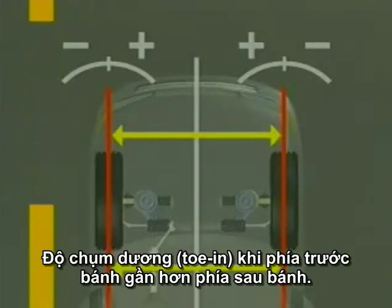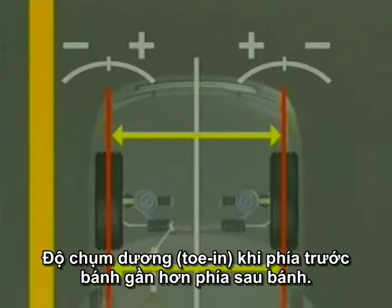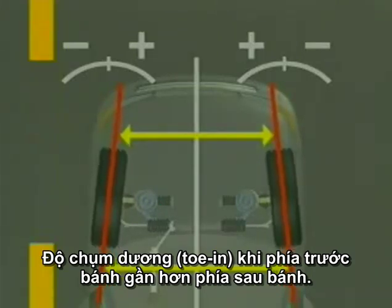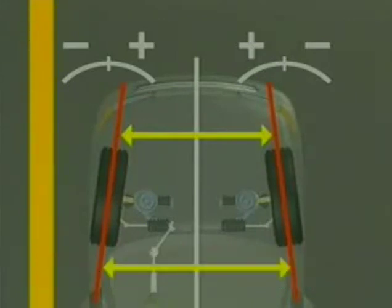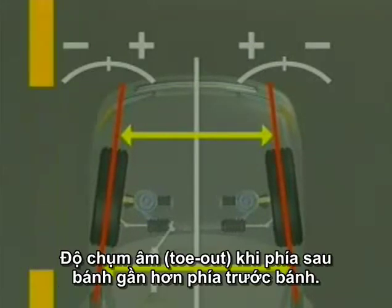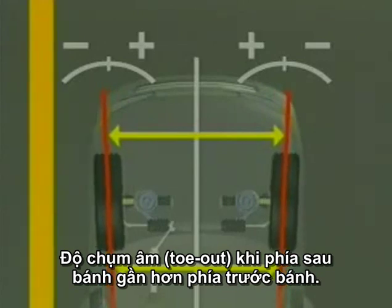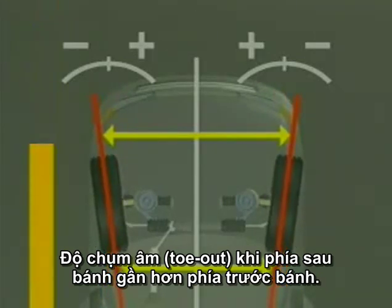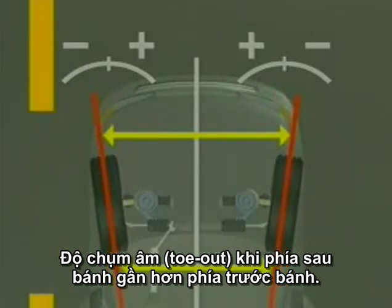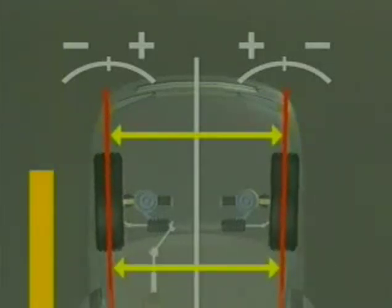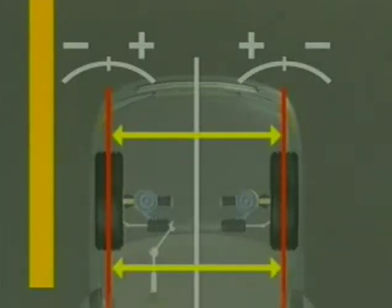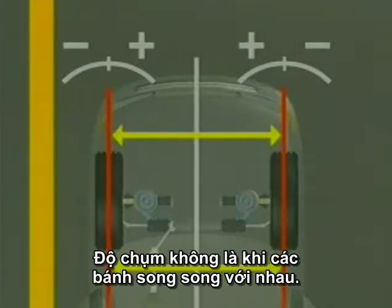Total toe is positive, or toe-in, when the front of the tires are closer together than the rear of the tires. Total toe is negative, or toe-out, when the rear of the tires are closer together than the front of the tires. Zero total toe occurs when the wheels are parallel.